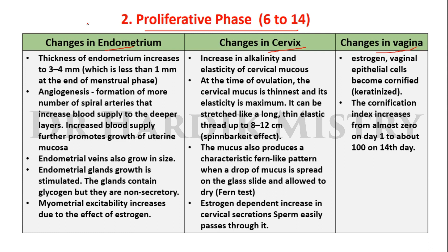In exams, a question on the endometrial cycle requires writing only about the endometrium, but a question on the menstrual cycle requires covering the endometrium, cervix, and vagina plus the ovarian cycle. For the endometrium, we will examine five points: thickness, angiogenesis related to arteries, changes in veins, endometrial glands, and myometrial excitability.